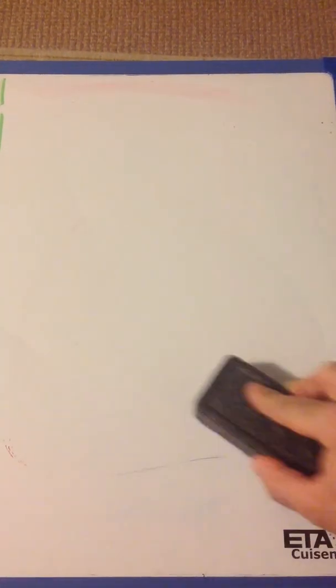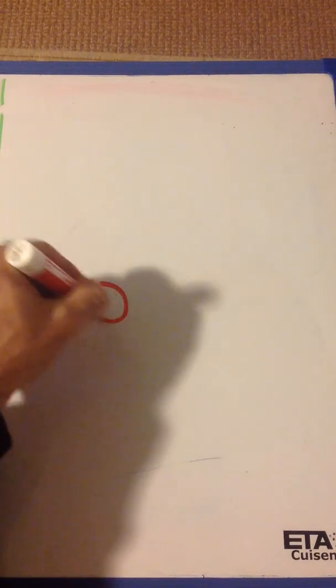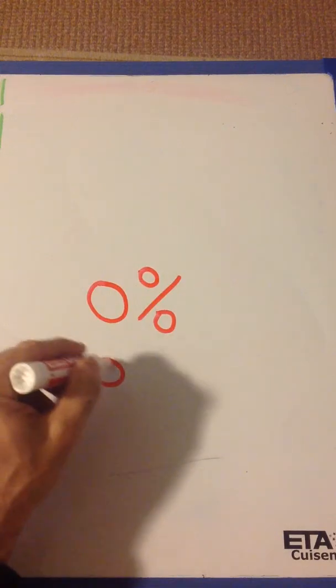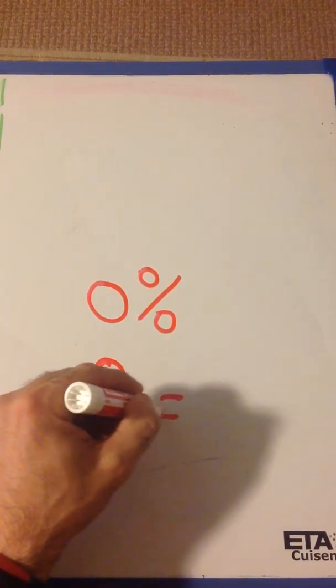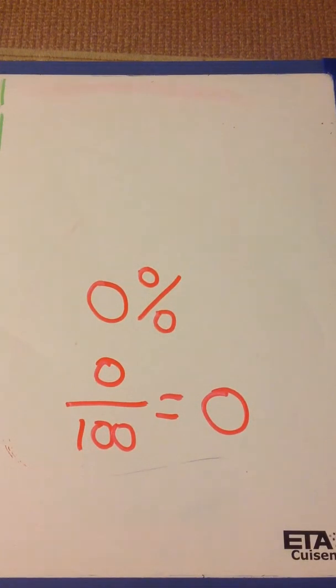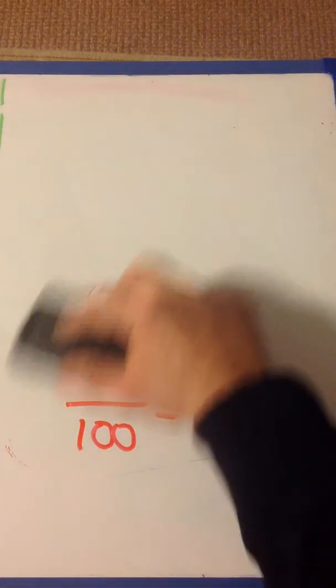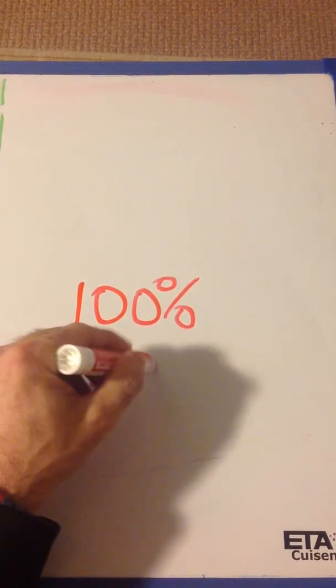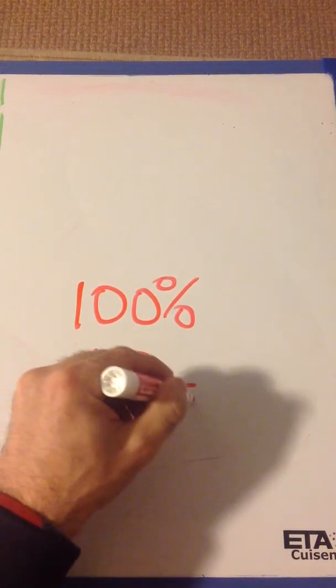What if you had 0%? You think we can have a 0%? Well, 0% just means 0 out of 100, which equals 0. That's 0%. Sometimes you can have 100%. That means you have everything. If you have 100%, it's just 100 over 100. It means you have everything.